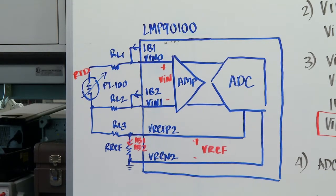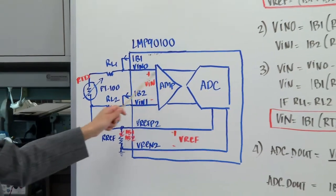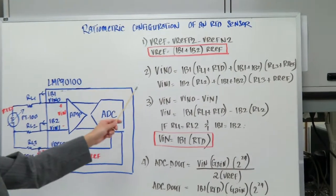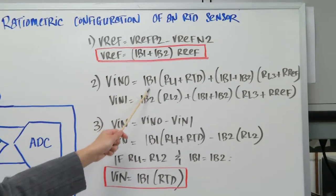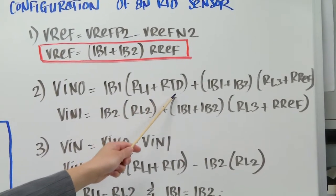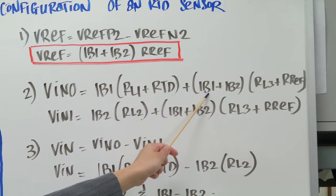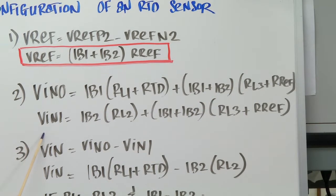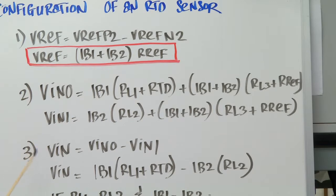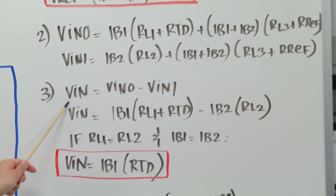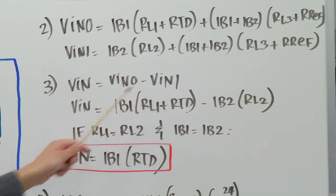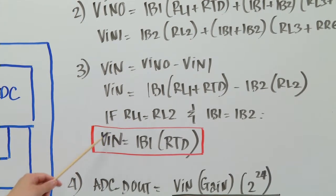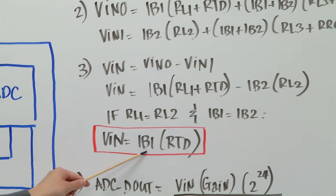Now let's take a look at how you can write the equations for the channel that the ADC will sample. In this case the channel will be VN0 minus VN1. So going back to the equations, VN0 is just the IB1 times the line resistance plus the RTD plus both of the bias current times the third line resistance plus the external RF. And you can also use the nodal equations to write your equations for VN1. And the channel that the ADC will sample is the difference VN0 minus VN1. And if you write down all the equations, essentially you will eliminate all the line resistances and the bias current to get the VN of IB1 times RTD.